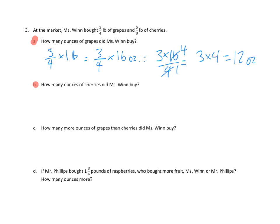I'll leave you to write the sentence there. Now let's go ahead and look at part B. How many ounces of cherries did Ms. Wynn buy? Well, five-eighths a pound of cherries, so five-eighths times one pound, we have the same process going on, is the same as five-eighths times sixteen ounces equals five times sixteen divided by eight,